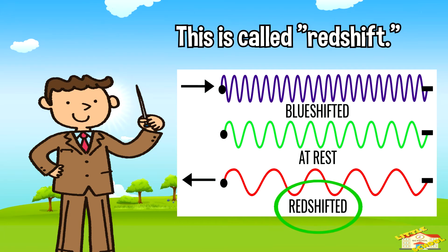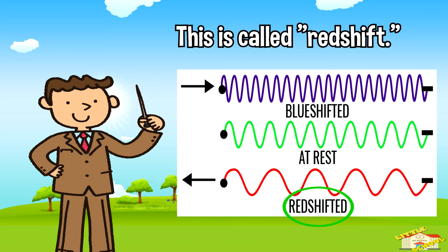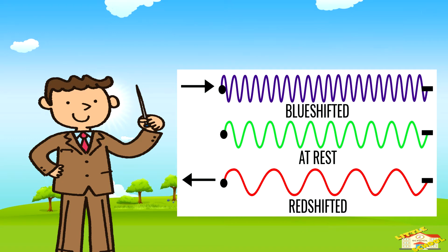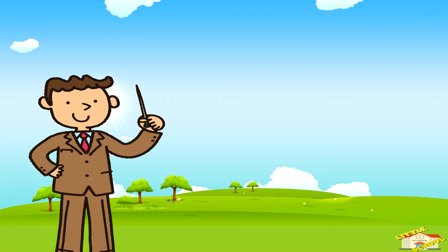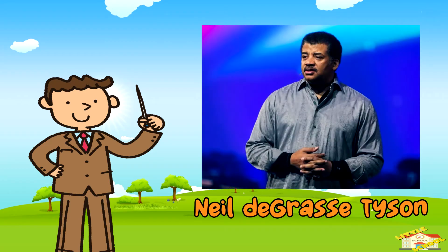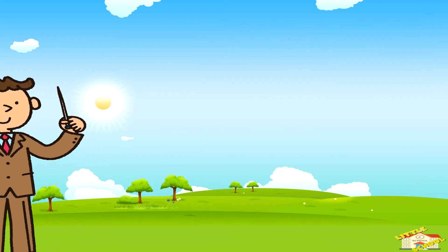This is called red shift. For a great example, let's listen to astrophysicist Neil deGrasse Tyson's explanation of the Doppler effect.